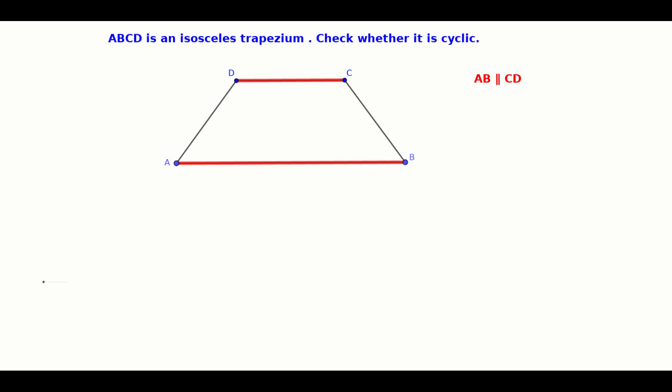In an isosceles trapezium, the non-parallel sides are equal. Here, AD is equal to BC.